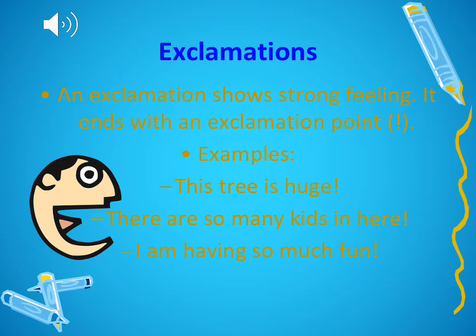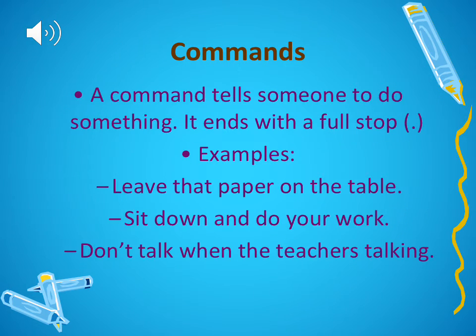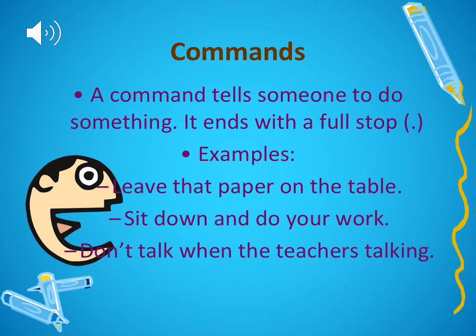The third type is an exclamation sentence. An exclamation shows a strong feeling and it ends with an exclamation point. Examples: 'This tree is huge!' 'There are so many kids in here!' 'I'm having so much fun!' It emphasizes a strong feeling.